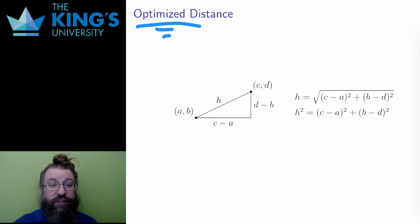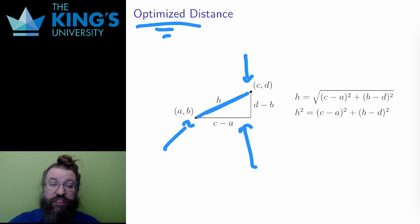I need to start with the distance between two points. So, let (a,b) and (c,d) be two points in the plane. I can draw this right triangle. The hypotenuse is the distance between the two points, so I can use Pythagoras. The side lengths are the differences between the coordinates. So, the distance h is the square root of (c-a) squared plus (d-b) squared.